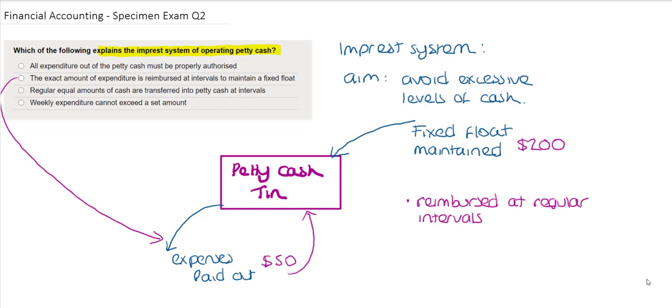the second option is what directly links to the explanation in this diagram, and so therefore it is the exact amount of expenditure that's reimbursed at intervals to maintain a fixed float. That is the correct answer.